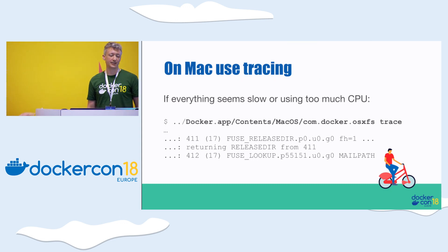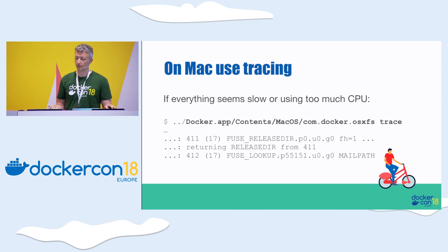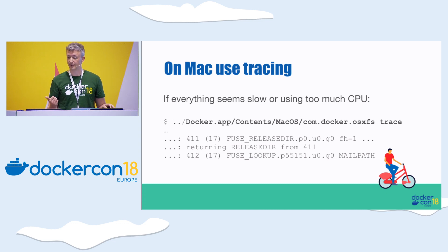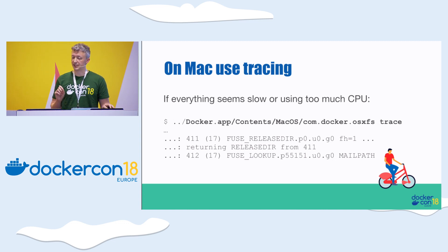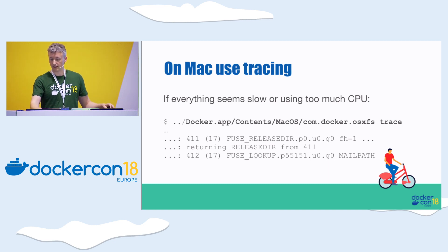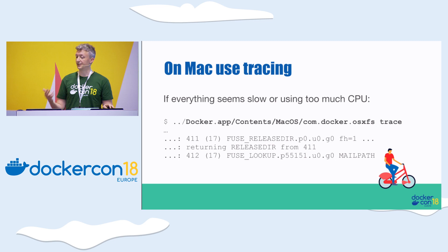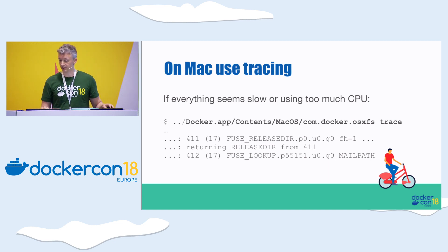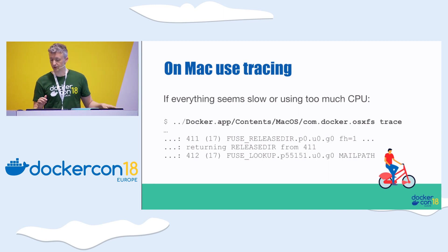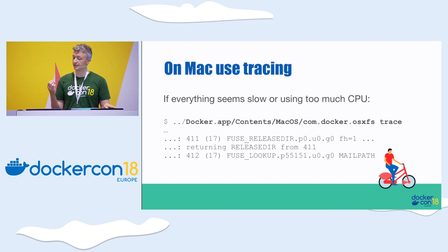If you are still seeing load — which manifests in Activity Monitor as the OSXFS process being busy, and maybe the hyperkit process too — there are debugging trace commands built into Docker for Mac. If you run this command line from the slide, it will give you a live trace of all file system operations, showing you the file names being accessed so you can recognize them and ask why we're sharing that. You can also see operations like reads, writes, and lookups, which gives you a clue about the kind of workload and what you can do to make it better.